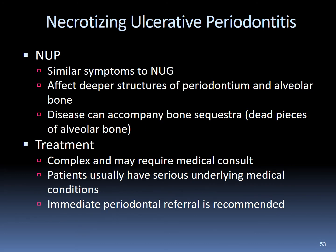Necrotizing ulcerative periodontitis (NUP) is very similar to NUG but affects deeper tissues of the periodontium and alveolar bone. The disease can be accompanied by bone sequestra — dead pieces of alveolar bone. Treatment is complex and may require medical consultation. Patients usually have serious underlying medical conditions. Immediate periodontal referral is recommended.